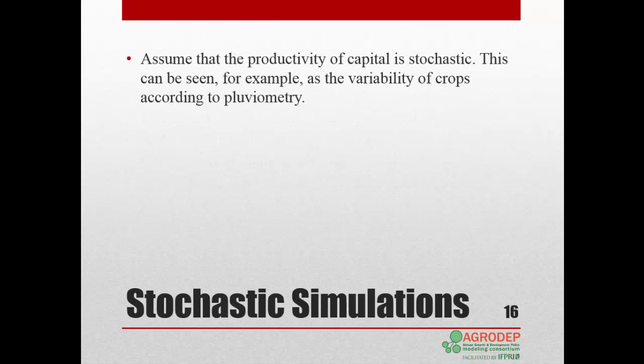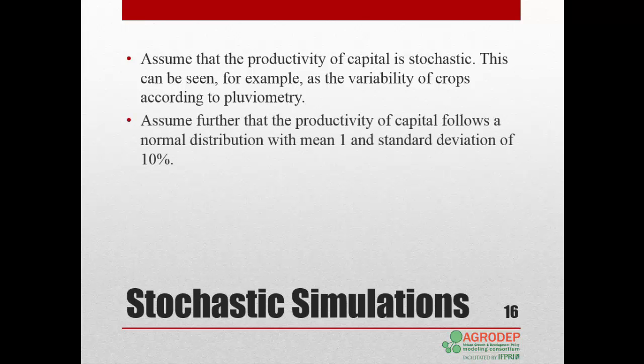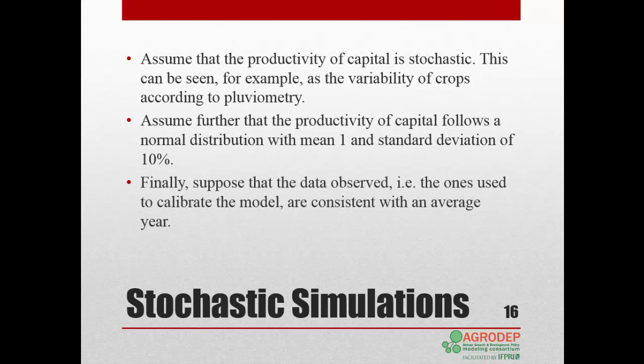Assume that the productivity of capital displays stochastic behavior because, for example, crop production is variable due to fluctuation in rainfall. Assume further that the productivity of capital follows a normal distribution with a mean equal to 1 and a standard deviation equal to 10%. Finally, assume that the observed data used to calibrate the model represent an average year.